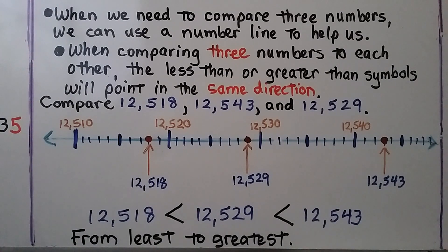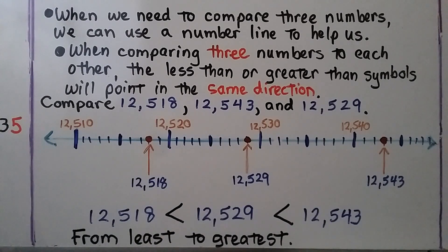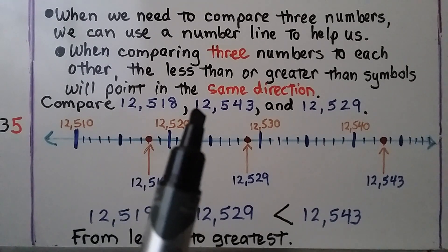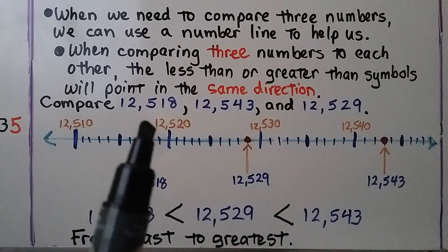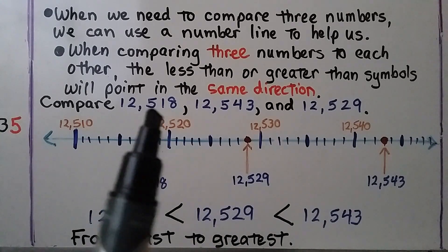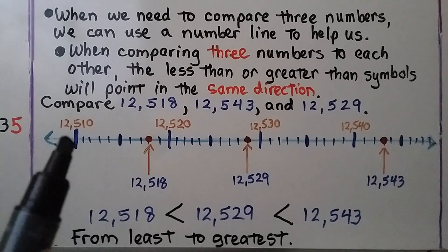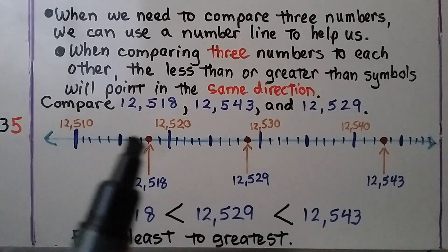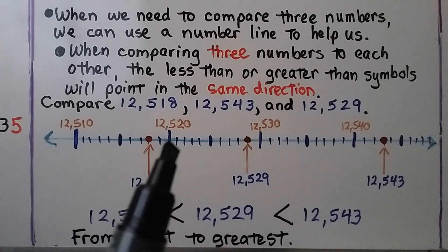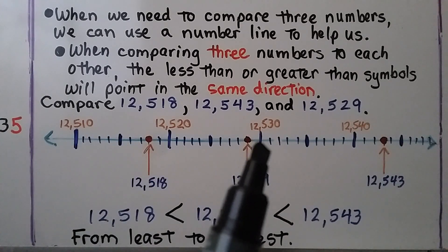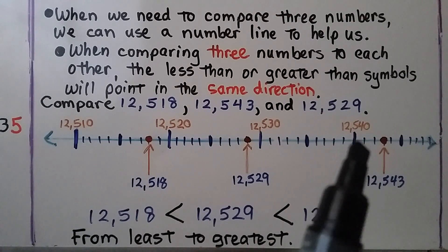We need to compare these three numbers to each other. We draw a number line — they all start with 12,000 and all have 500. So our number line can start with 12,510 and go to 12,520, 12,530, 12,540, with little lines in between.